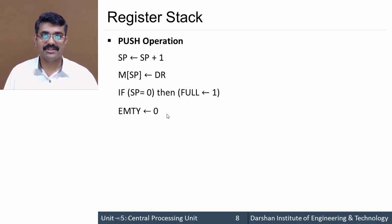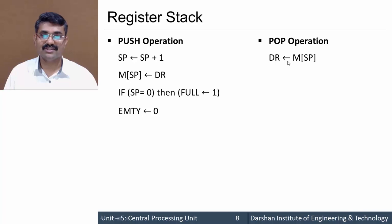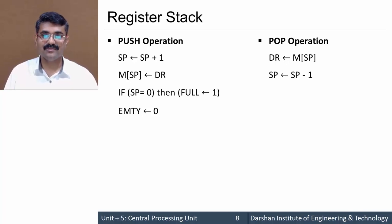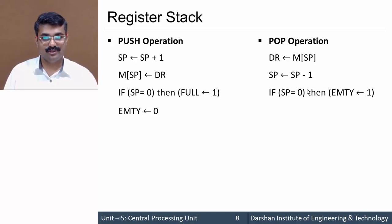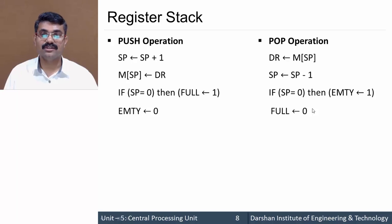For the pop operation, the content of the stack pointed to by SP is first transferred to DR (the data register). Then SP is decremented by one: SP = SP − 1. If SP becomes zero, the stack is now empty, so we set the EMPTY flag to 1 and the FULL flag to 0. This is how push and pop operations are carried out on the register stack.